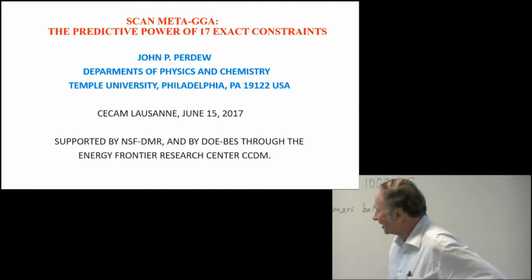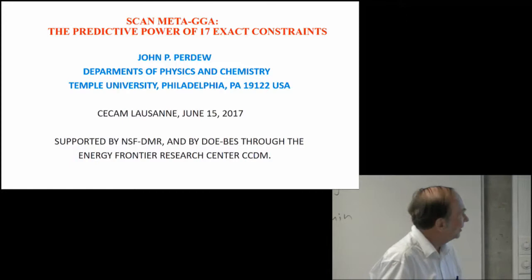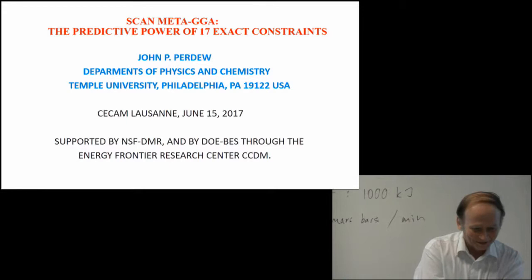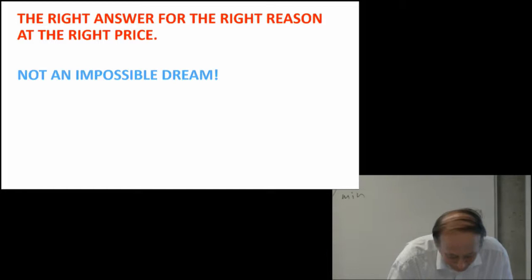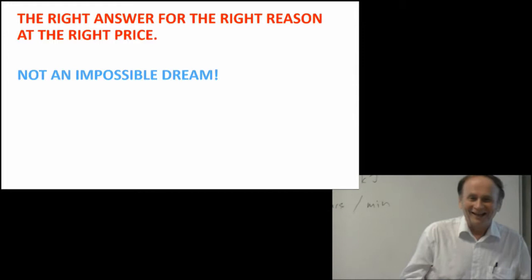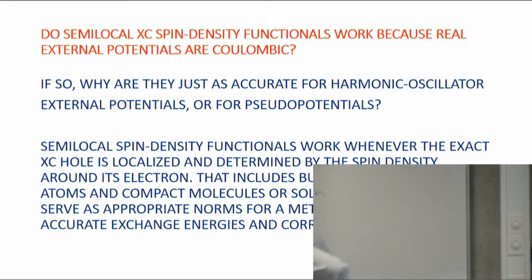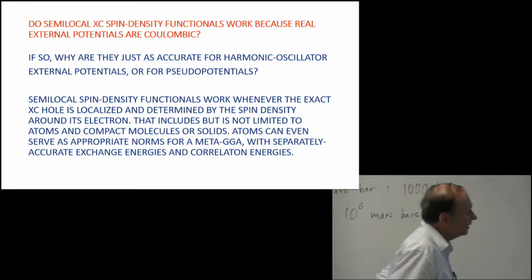So this is another talk about the SCAN Meta-GGA. Karen might call it a sales talk. I do want to sell the product, so I have to advise you of that in advance. I call it SCAN Meta-GGA: the predictive power of 17 exact constraints. I'll start with my conclusion: can we get the right answer for the right reason at the right price? We don't have it yet, but we're getting closer, and I think SCAN brings us a lot closer to the realization of that dream.